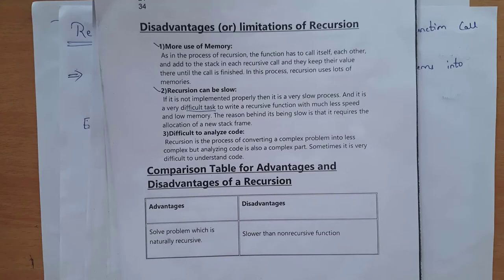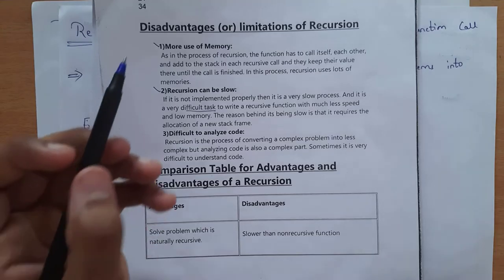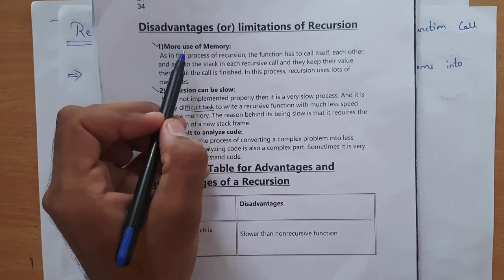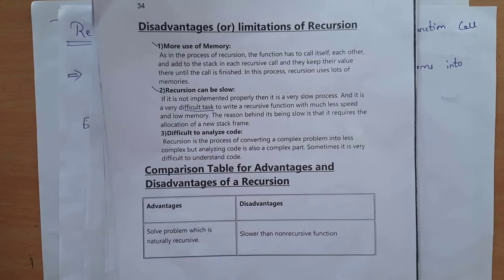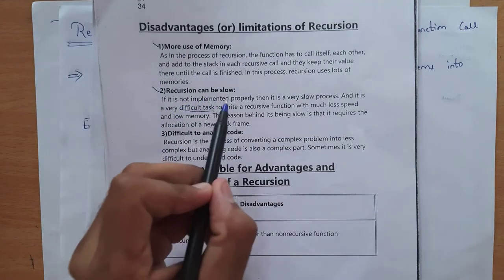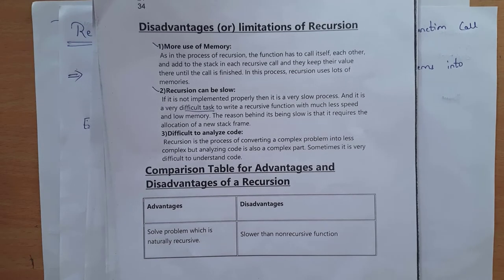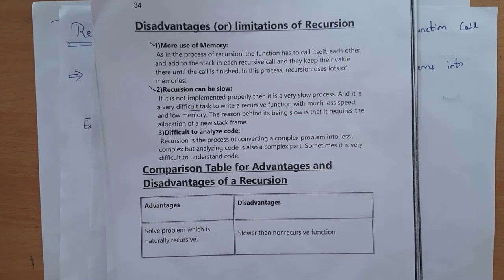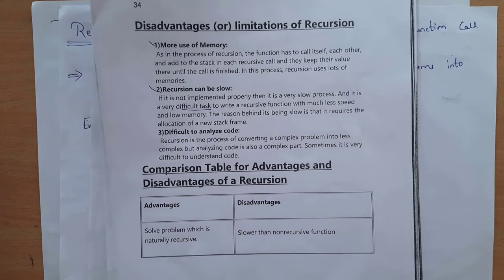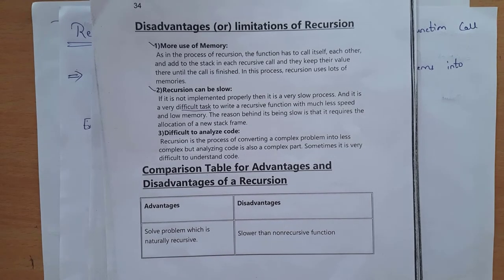These are the limitations of recursion. First disadvantage: recursion will consume more memory. Second disadvantage: recursion can be slow — if recursion is not implemented properly it will be a slow process. Third disadvantage: writing a recursion function is not an easy task; it is a complicated task to write a recursion program, and it is difficult to analyze code in a recursion function.